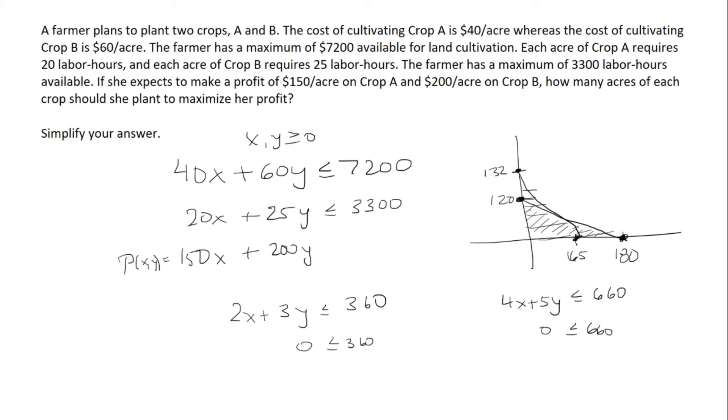So really we're just looking at the intersection of both of these, which is going to be this region inside. We can find out where the intersection is by doing a system of equations: 2x plus 3y equals 360 and 4x plus 5y equals 660.